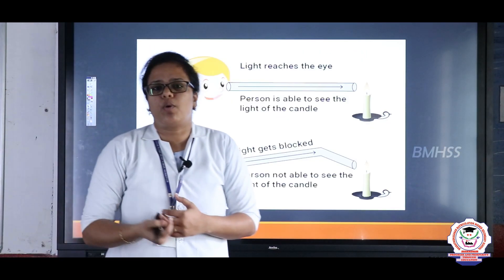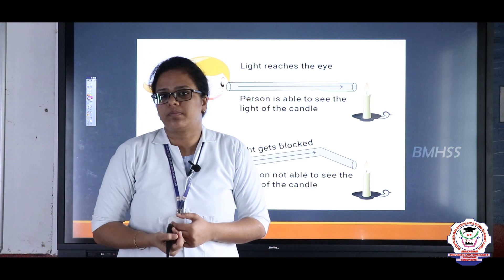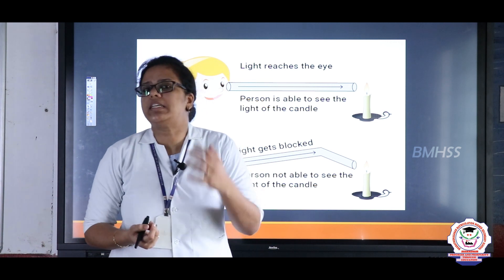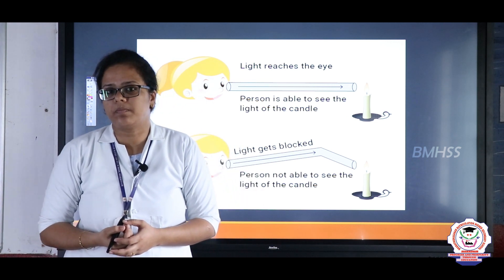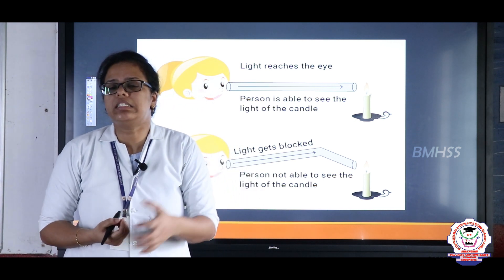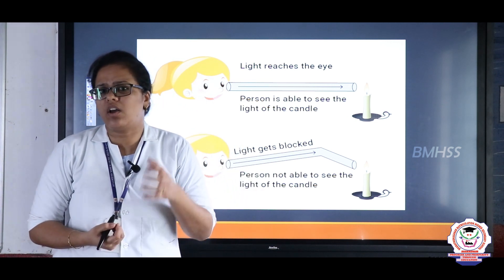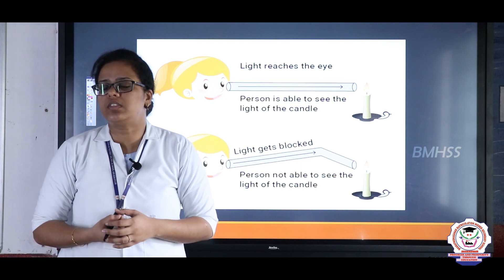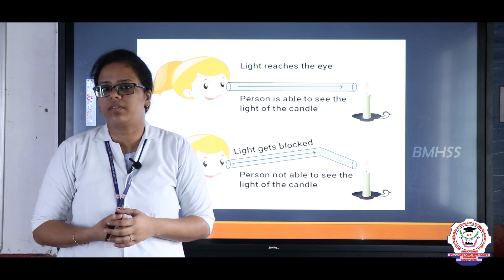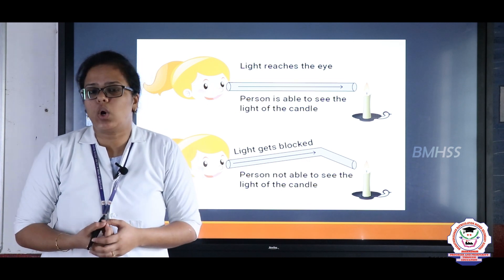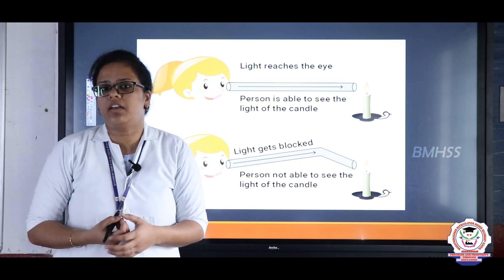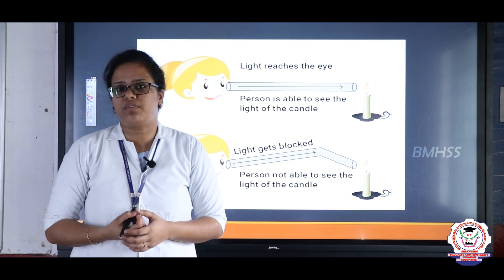Next, let us see the properties of light. Light is basically a form of energy, and it always travels in a straight line. This property is called rectilinear propagation of light.